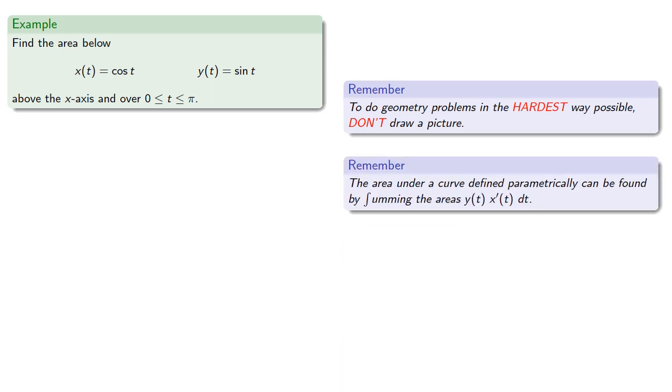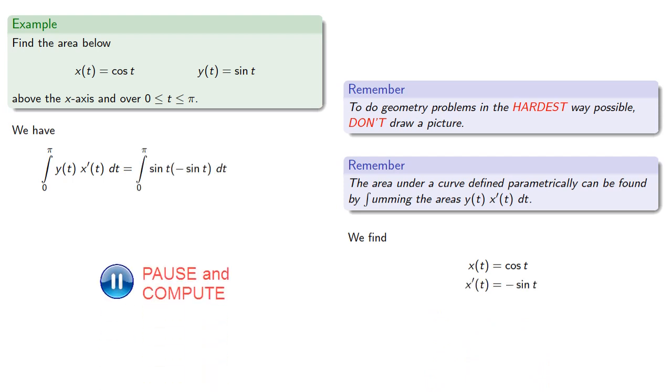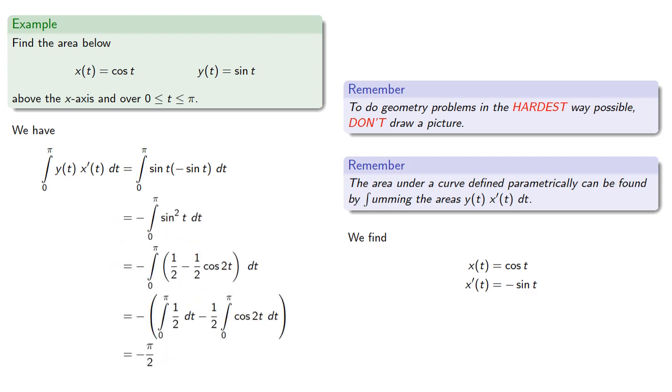And our formula says that the area under a curve defined parametrically can be found by summing the areas y of t, x prime of t, dt. And we find the derivative of x will be, and now we can evaluate our integral. And so our area is negative pi halves.